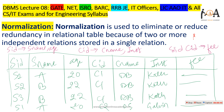Normalization is used to eliminate or reduce redundancy in relational tables because of two or more independent relations which are stored in a single relation. Basically, redundancy means the same data is placed at different places. To reduce that redundancy, we place only one copy of the data and whenever we require that data, we refer to it.